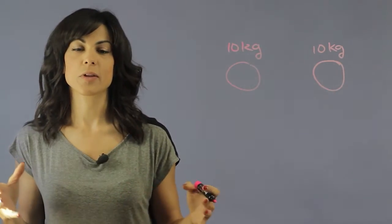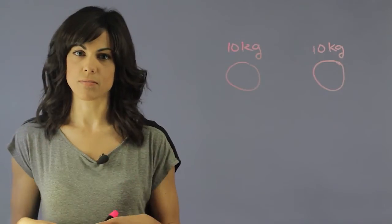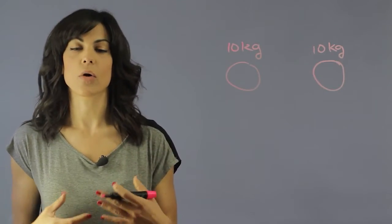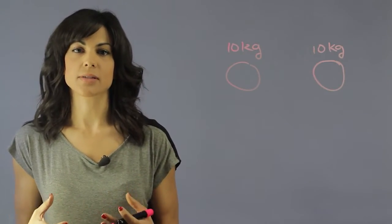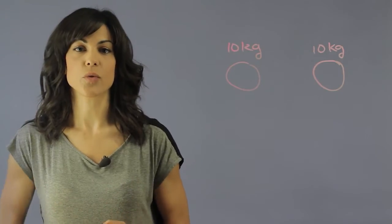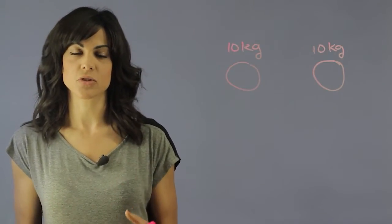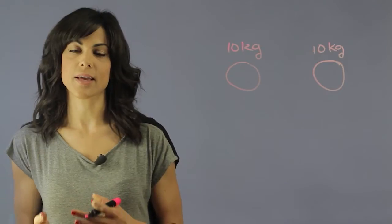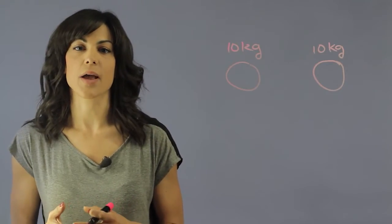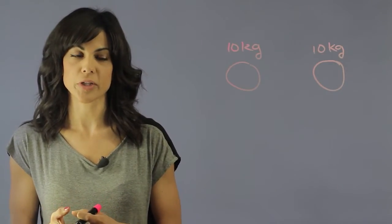Now, how come in space things float and on Earth things fall to the bottom? And it's because on Earth, mass experiences the gravitational forces and therefore its weight changes. So weight is a measurement of how mass reacts with the gravitational pull of an object.